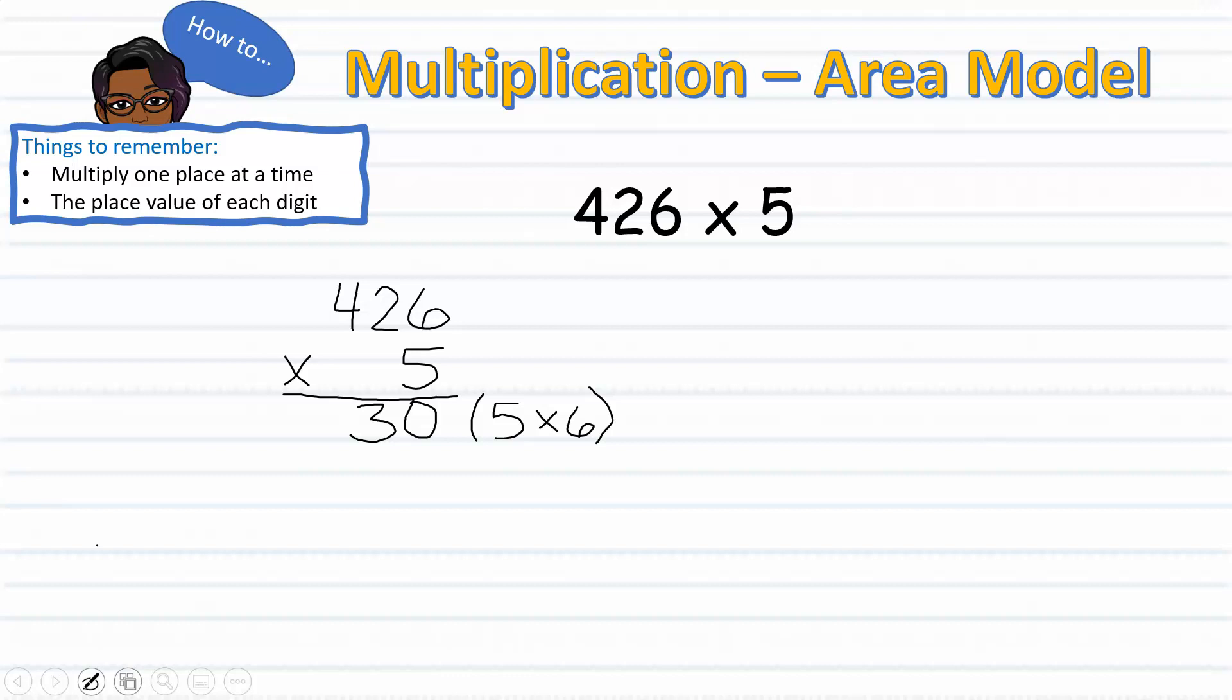And now I am ready to multiply 5 times the 2 in the tens place, keeping in mind that part of the Partial Products Strategy requires you to show your work off to the side. So I have 5 times 2 tens, which is 20.